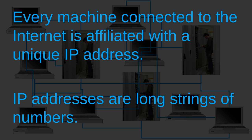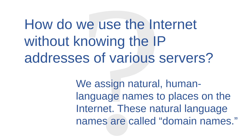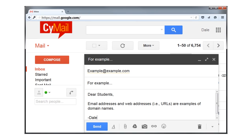Think about it. How many IP addresses can you name from memory? I would guess that the answer is zero. And yet you probably request information from servers at various IP addresses every single day. So how do we use the Internet without knowing the IP addresses of various servers? The answer is that we assign natural human language names to places on the Internet. These natural names are called domain names. Both email addresses and web addresses are common examples of domain names.